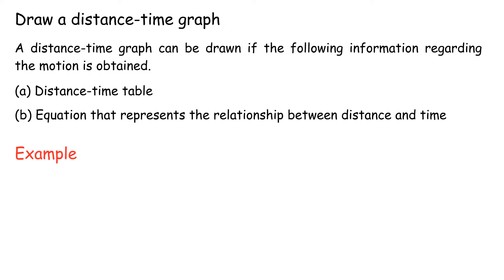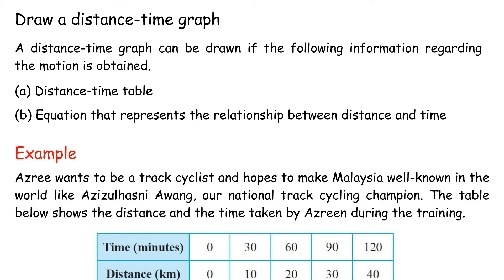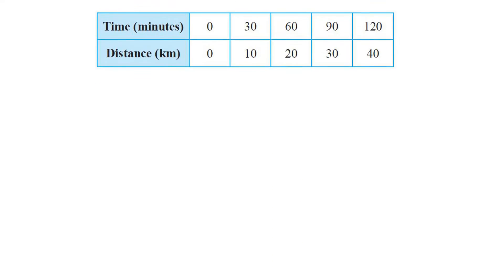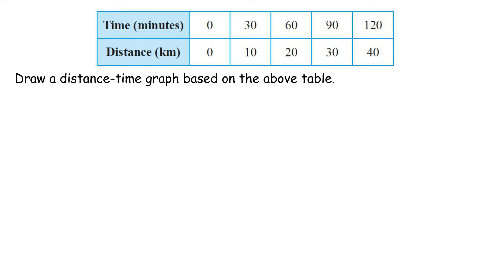Example: Azri wants to be a track cyclist and hopes to make Malaysia well-known in the world like Aziz Awang, our national track cycling champion. The table below shows the distance and the time taken by Azri during the training. Draw a Distance-Time Graph based on the above table.